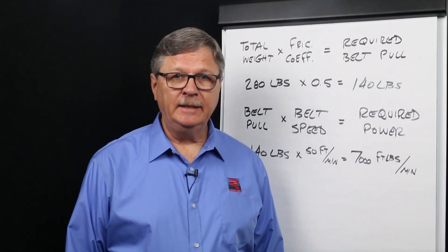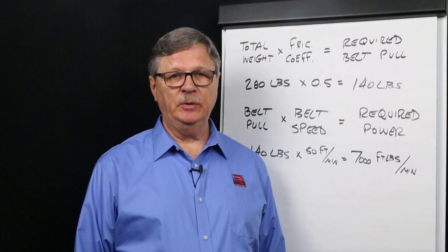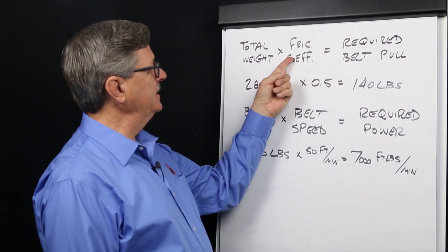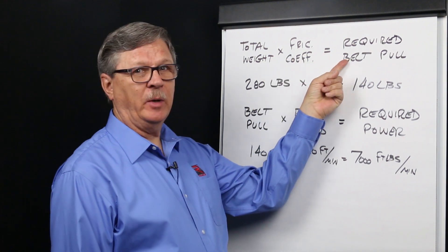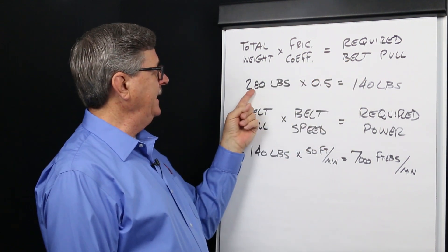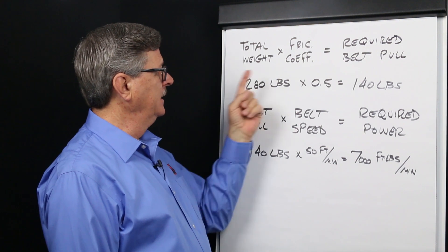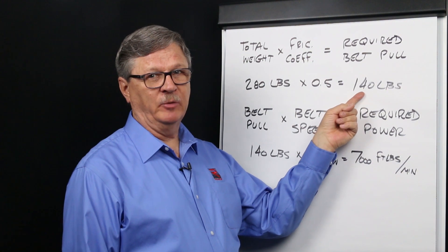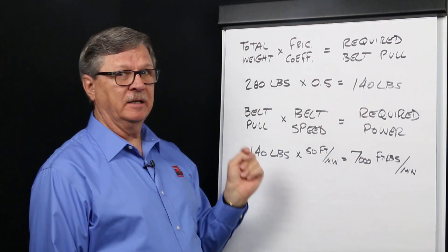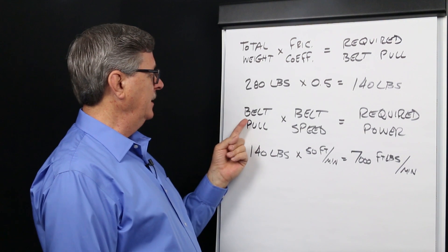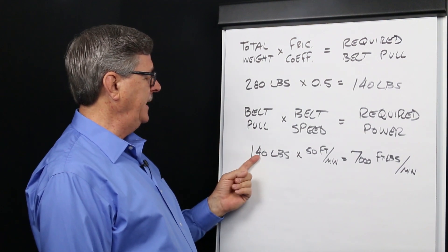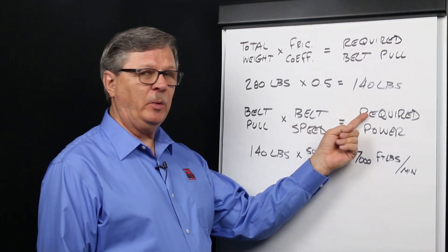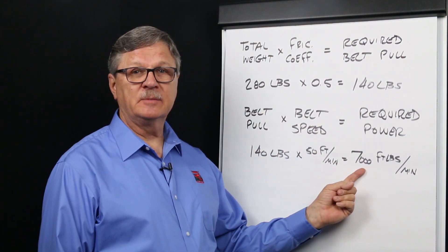Since the total weight times the frictional coefficient equals belt pull, we can now calculate required power. Total weight times frictional coefficient equals required belt pull. 280 pounds of total load times a frictional coefficient of 0.5 equals a belt pull requirement of 140 pounds. Now we can convert this to power. A belt pull of 140 pounds times a belt speed of 50 feet per minute equates to a required power of 7,000 foot-pounds per minute.